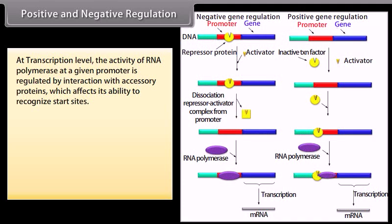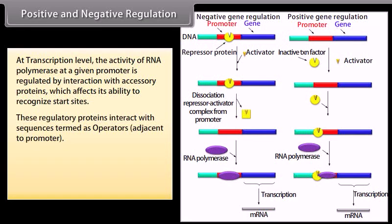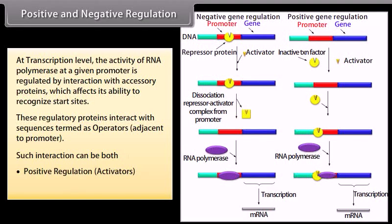At the transcription level, the activity of RNA polymerase at a given promoter is regulated by interaction with accessory proteins which affects its ability to recognize start sites. These regulatory proteins interact with sequences termed as operators adjacent to the promoter. Such interaction can be both positive regulation via activators, and negative regulation via repressors.